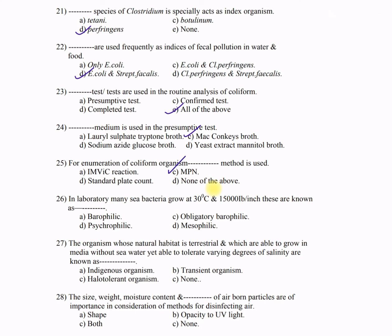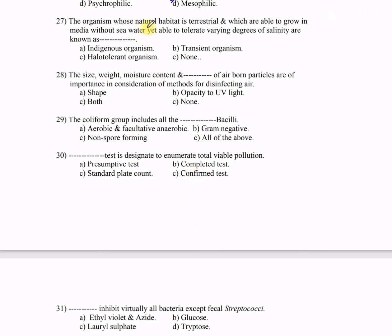Question 26: In the laboratory, many deep-sea bacteria grow at 30°C and 15,000 pounds per square inch. These are known as — A) barophilic, B) obligatory barophilic, C) psychrophilic, D) mesophilic. These are known as obligatory barophilic organisms. Question 27: Organisms whose natural habitat is terrestrial, able to grow in media without sea water, yet able to tolerate varying degrees of salinity, are known as — A) indigenous, B) transient, C) halo-tolerant, D) none. The correct answer is C — halo-tolerant.